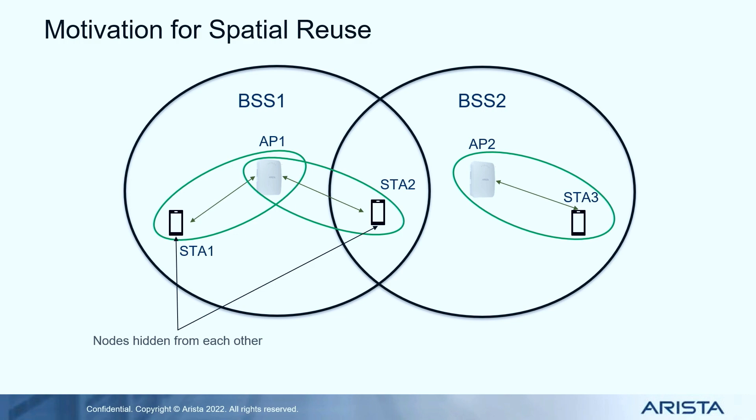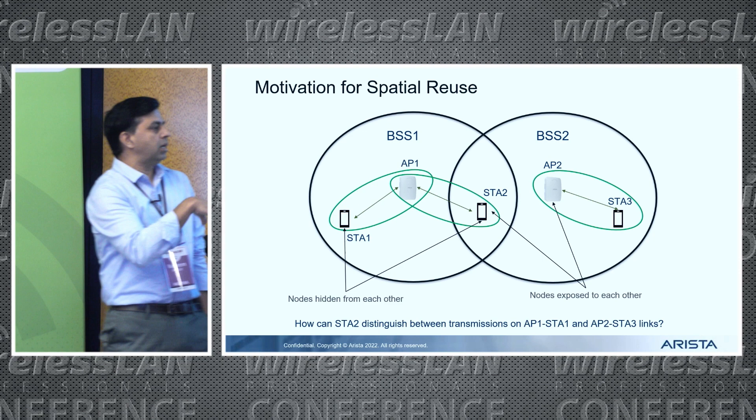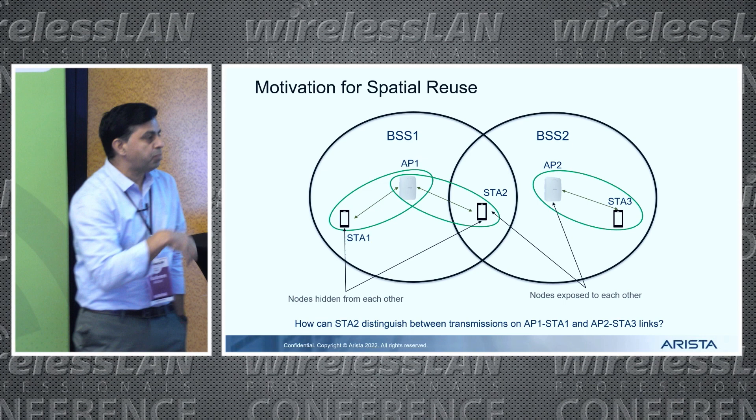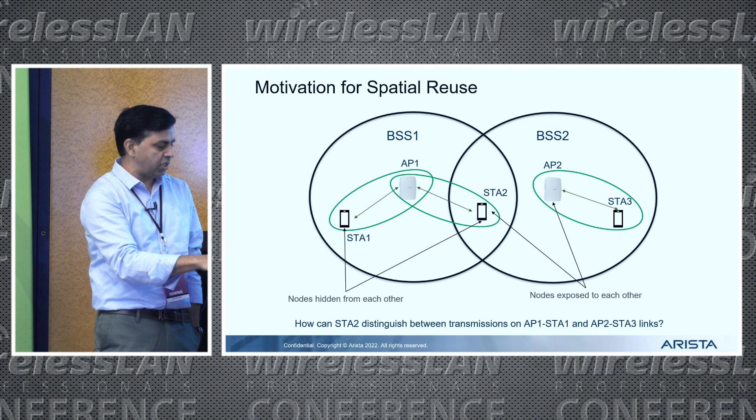The hidden node and exposed node problems have been around for a long time. The challenge is: if we want to enable the AP1-STA2 and AP2-STA3 links to operate in parallel, then STA2 has to be able to figure out which BSS a transmission belongs to. Is it coming from AP1 or STA1, or from AP2 or STA3? If it's possible to figure this out, maybe we could do something better than waiting for the OBSS transmission to finish.